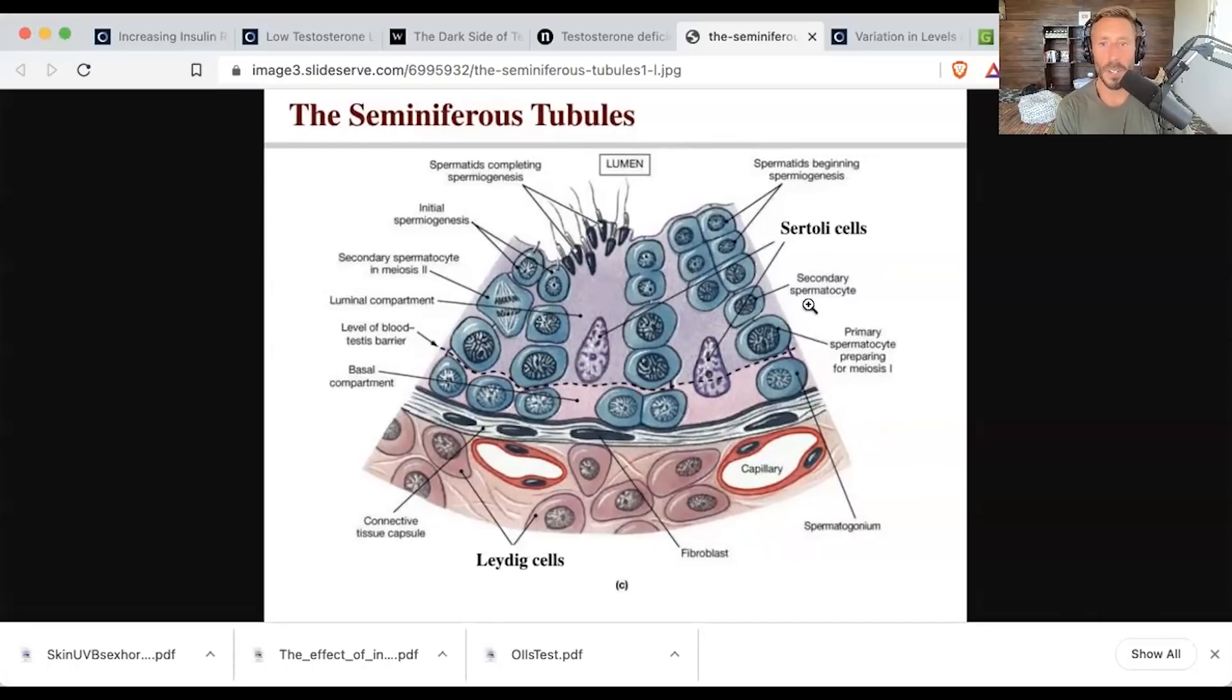But you can see that there is a seminiferous tubule here. The Sertoli cells are here. The spermatids are here. As we remember from earlier, FSH is going to the Sertoli cells, being involved in the formation of spermatogenesis. That is sperm. LH is going to the Leydig cells. And from there, we are getting testosterone produced in the testicles.